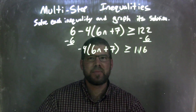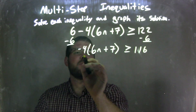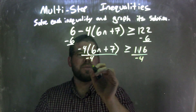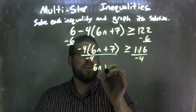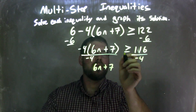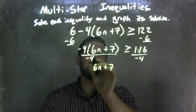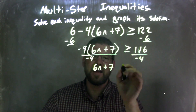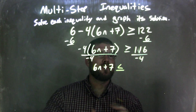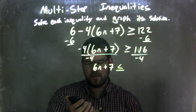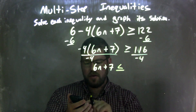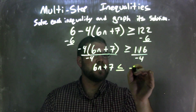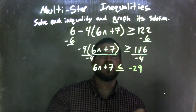Then, instead of distributing the negative 4, I'm going to divide by negative 4 on both sides. That leaves me with what's in the parentheses: 6n plus 7. It's not a greater than sign — when we divide by a negative over the inequality, it needs to flip from a greater than or equal to sign to a less than or equal to sign. Now it's 116 divided by negative 4. 116 divided by negative 4 is negative 29, because a positive divided by a negative is a negative.